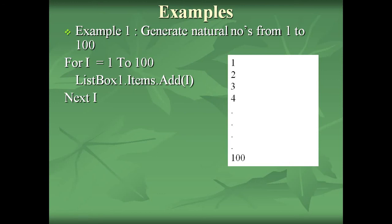After adding 100 into the listbox, when it reaches Next i, i becomes 101. When i becomes 101, the loop is terminated.